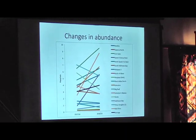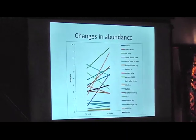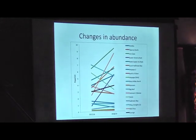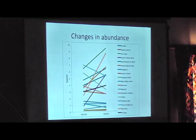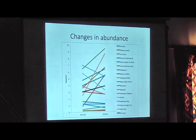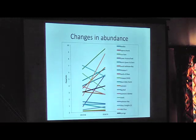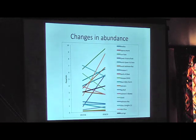We've done some correlations to show that this correlates really strongly with densities when we break it down and use the GPS units to limit the area. We haven't done that full analysis yet, but we know that this is a good proxy for abundance in these areas. Each individual colour here represents a different site.